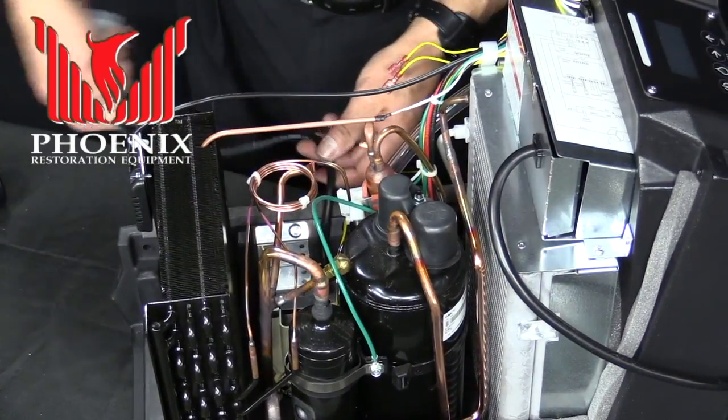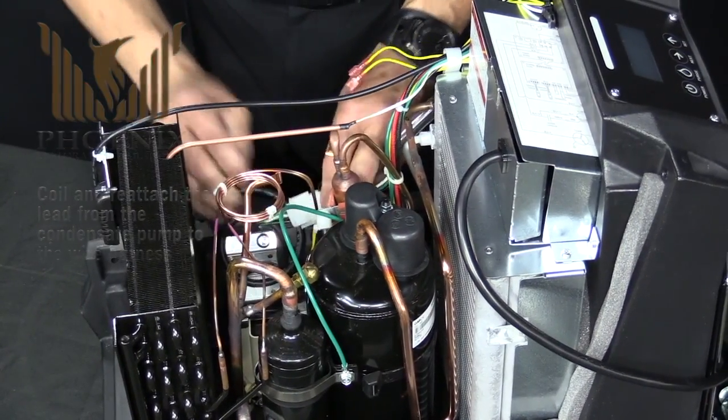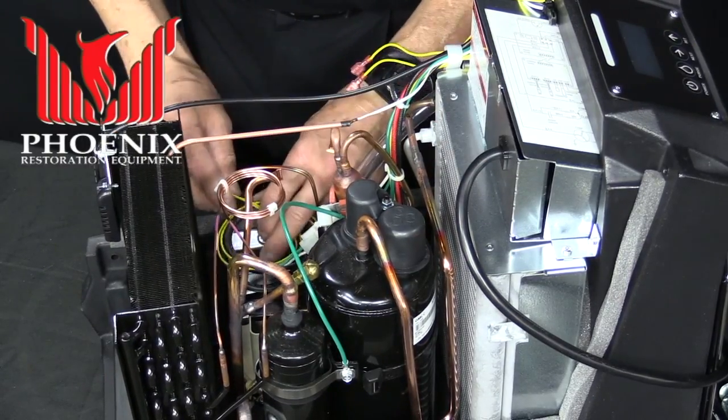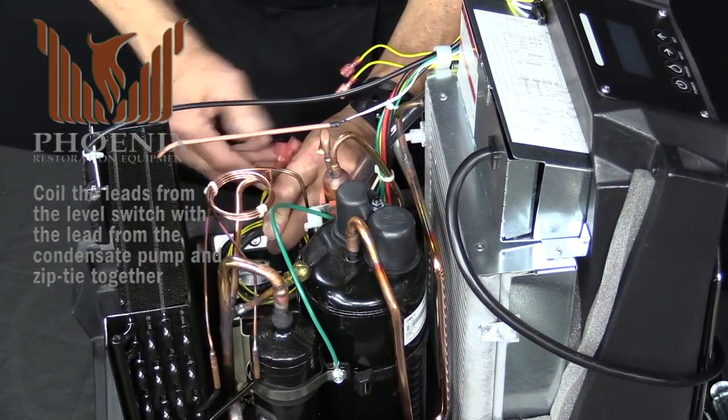Next we're going to coil and reattach the lead for the condensate pump, followed by coiling the leads for the level switch around the lead for the condensate pump.